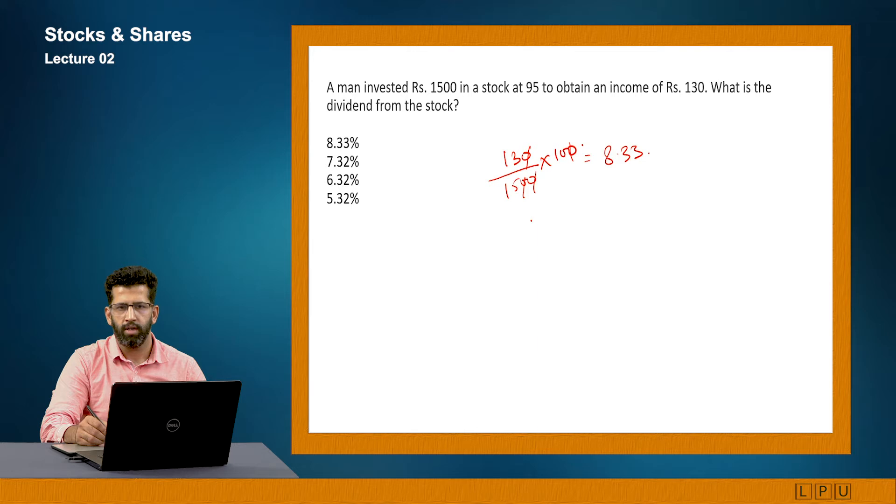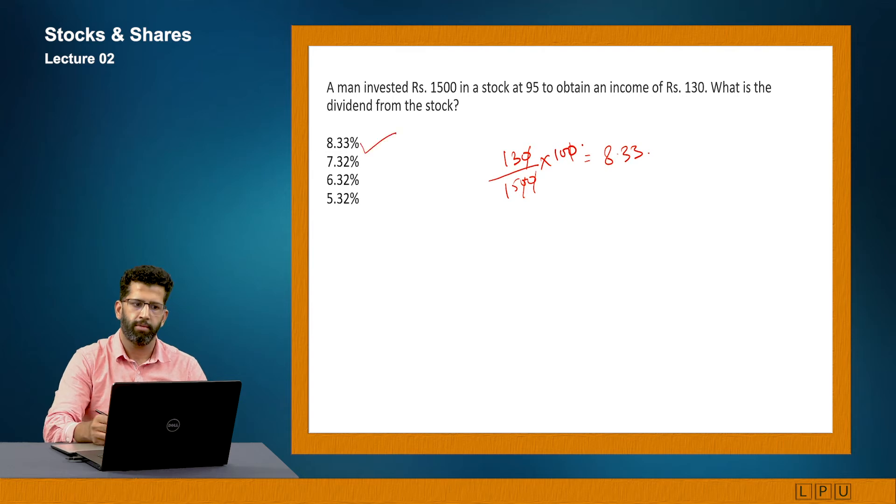Now there can be other possibility as well. The other possibility is how many shares he have purchased. If I want to calculate it on 95 rupees, in that case it will be different because 8.33 is on 100 rupees. If I want to calculate it on 95, it will be more, but I hope you understand the concept here. It will be 8.33 percent. He is just earning 8.33 percent against his investment.